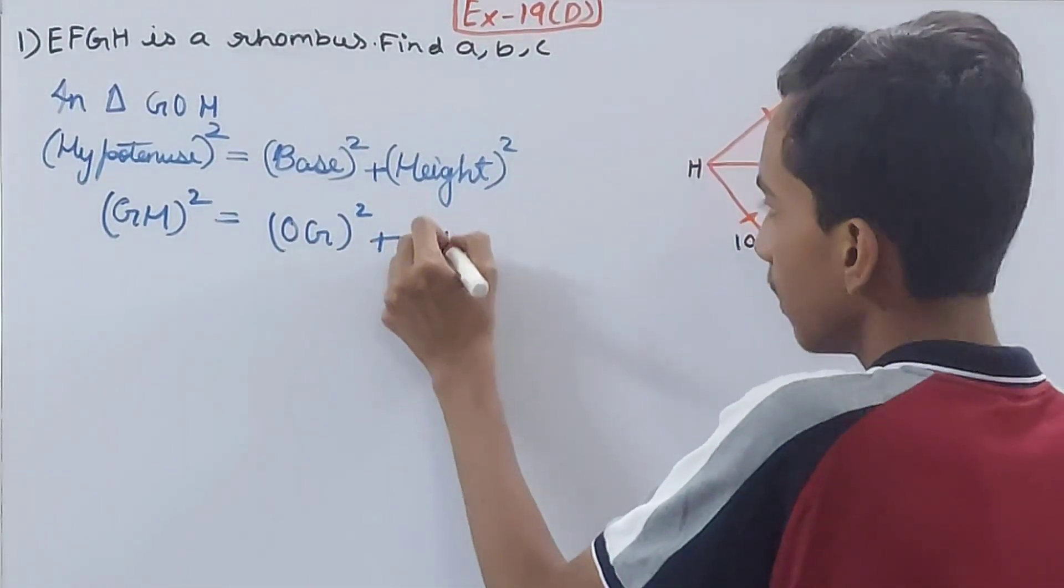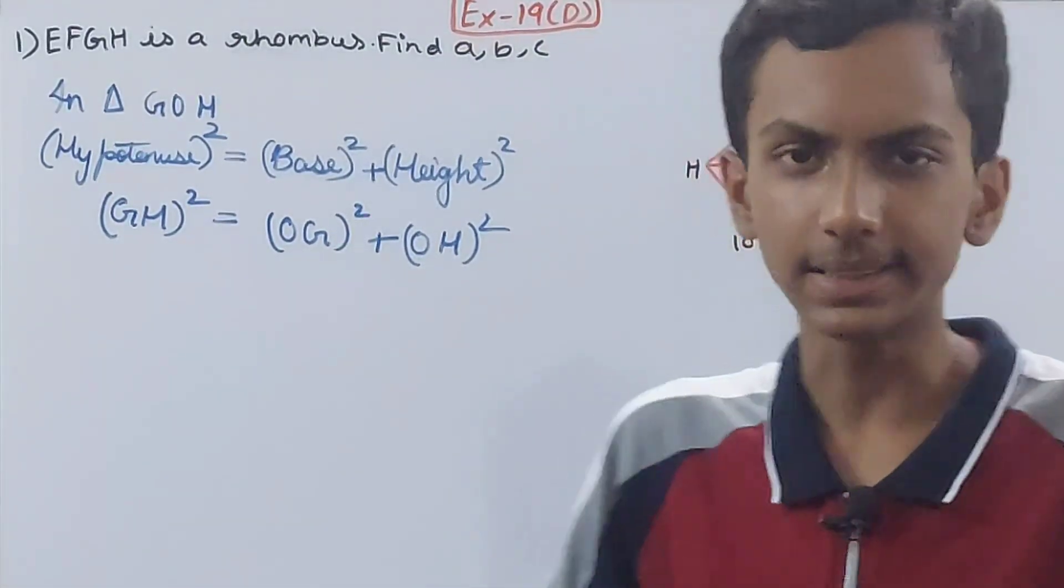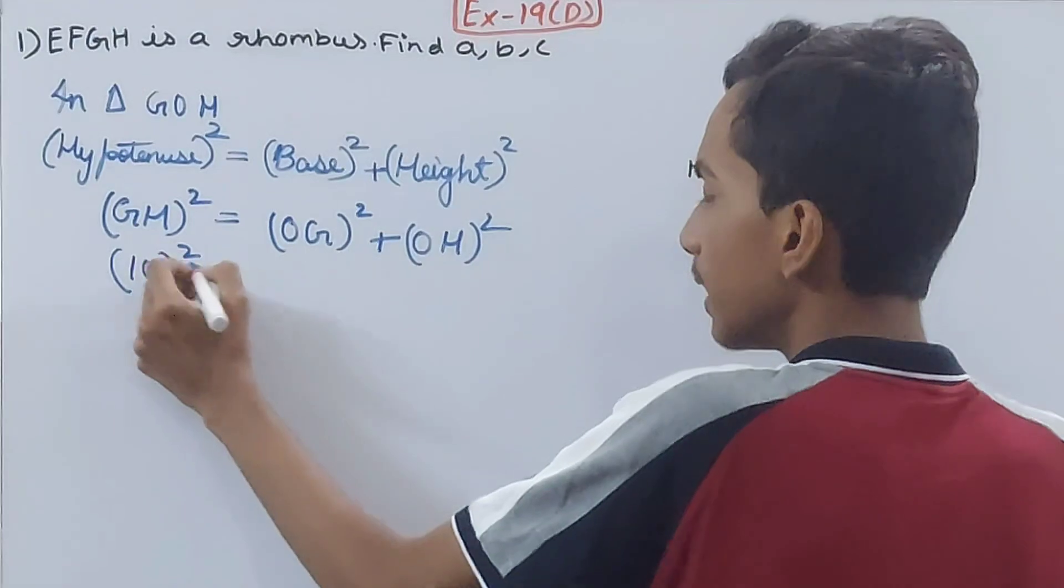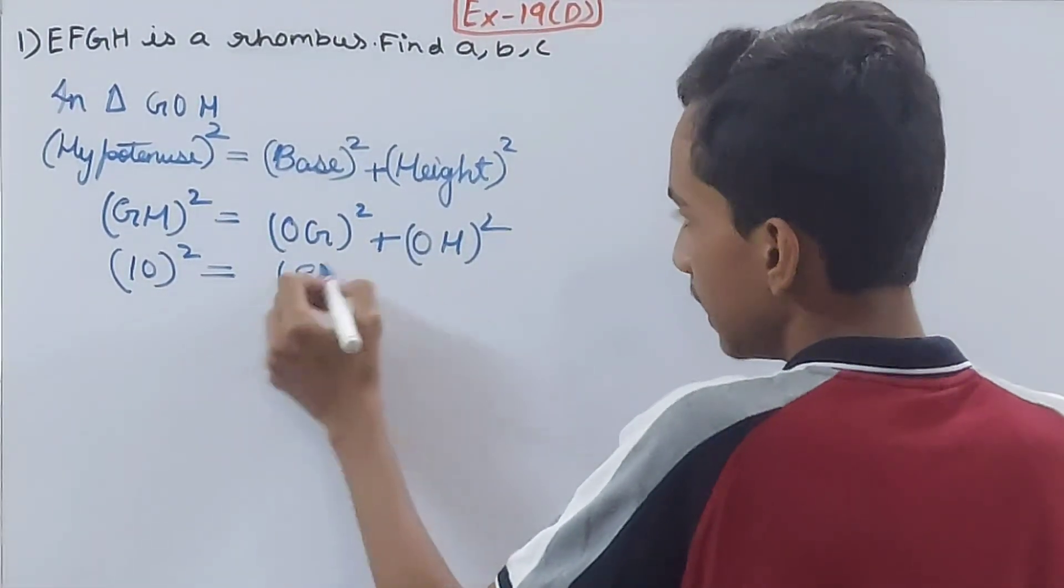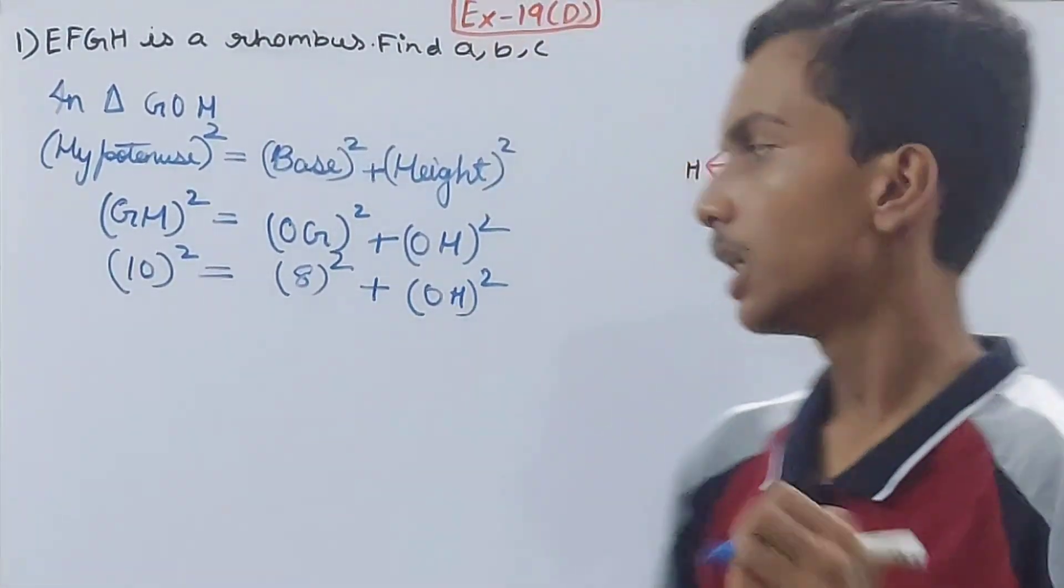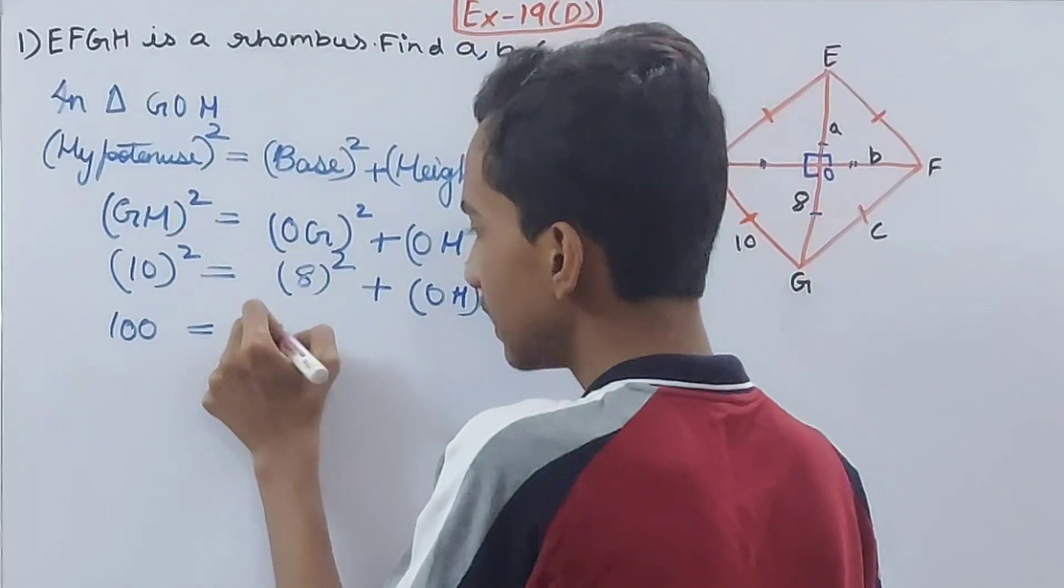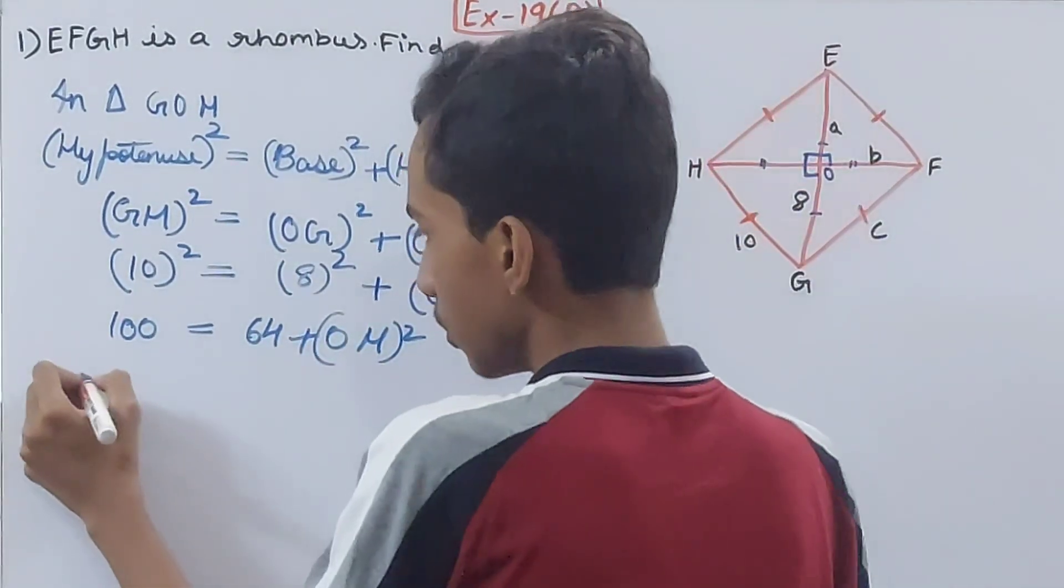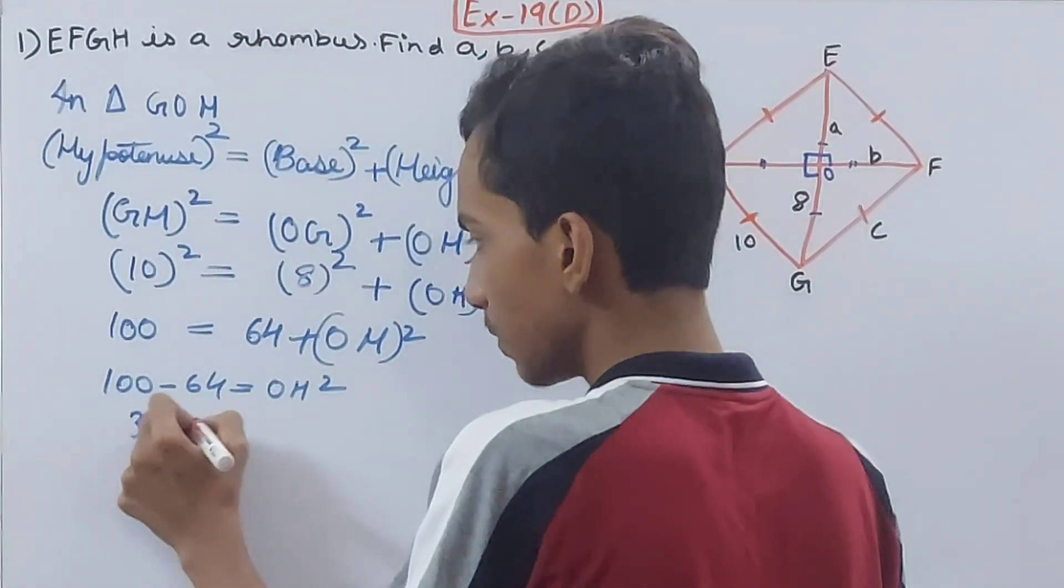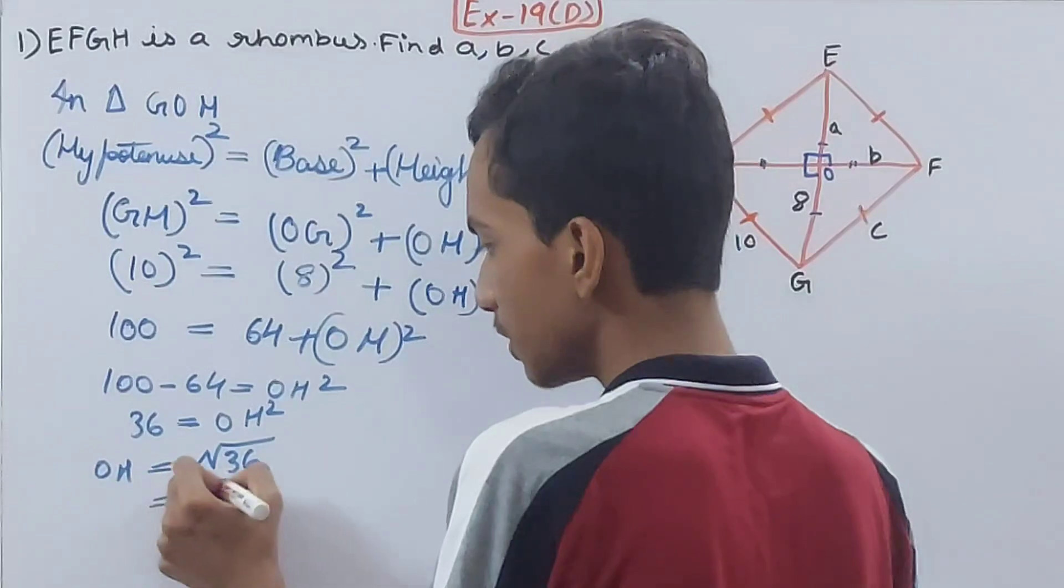plus OH squared. The square of the hypotenuse is equal to the square of the other two sides. Let's put the values: GH is 10, so 10 squared. OG is 8, so 8 squared. OH we have to find. So 100 is equal to 64 plus OH squared. 100 minus 64 equals OH squared, so 36 equals OH squared. OH will be equal to the square root of 36, that means it is equal to 6.